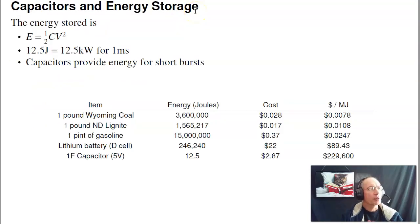As mentioned before, capacitors store energy. The energy stored is one-half CV squared. If I integrate the previous equation I equals CdV/dt, multiply by V and integrate, I get one-half CV squared. What that means is if I have a one-farad capacitor, that can store 12.5 joules of energy. That's not a whole lot, but if I can supply 12.5 joules for one millisecond, that's 12.5 kilowatts. Capacitors essentially provide energy in a circuit for very small amounts of time, small bursts.